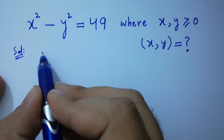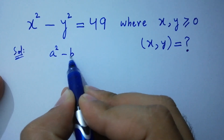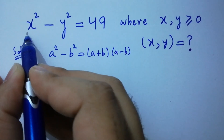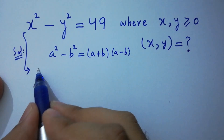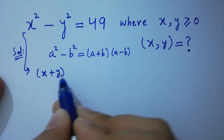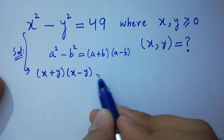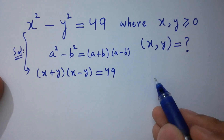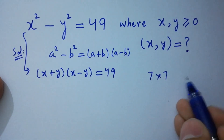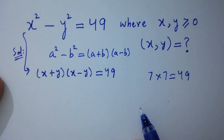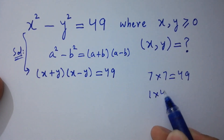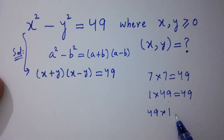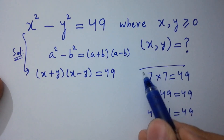We know the formula a squared minus b squared equals a plus b times a minus b. Applying this, we have x plus y times x minus y equal to 49. We can see there are 3 cases: 7 times 7, 1 times 49, and 49 times 1 — all equal to 49.